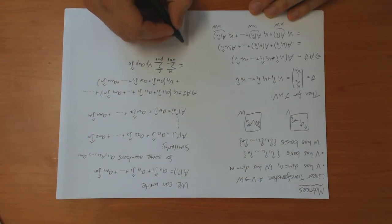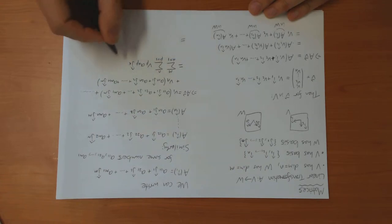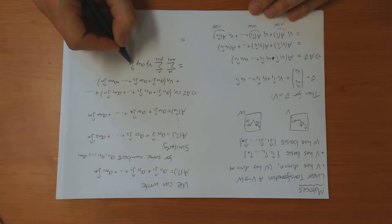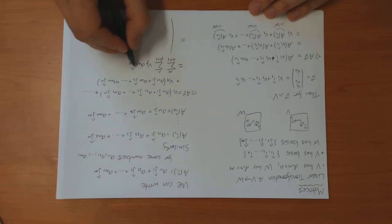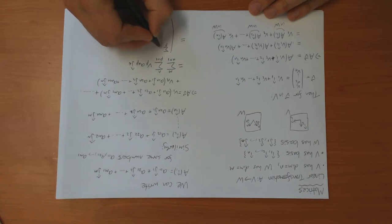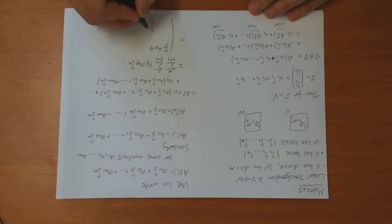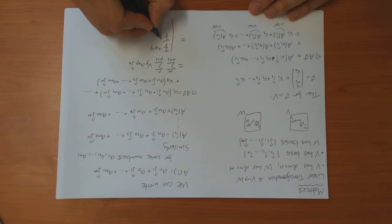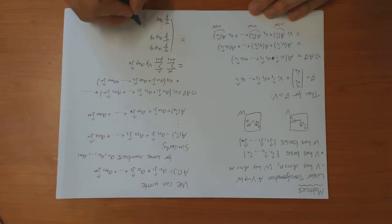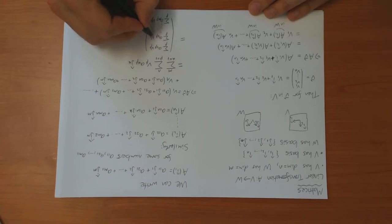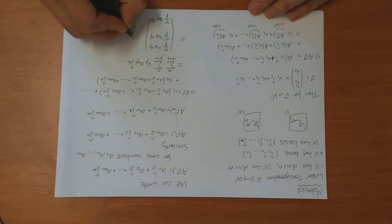That's written it all down in terms of components. As a column vector, the first component is the sum over beta of A_{1,beta}·V_beta, the next component is the sum over beta of A_{2,beta}·V_beta, and so on down to the sum over beta of A_{M,beta}·V_beta. You can see that there are M terms, so this is indeed a vector in W.